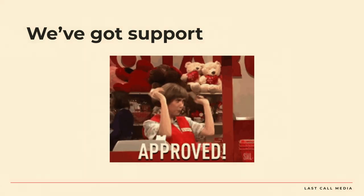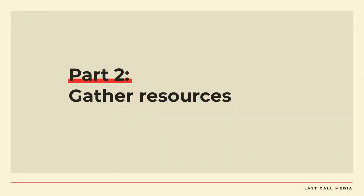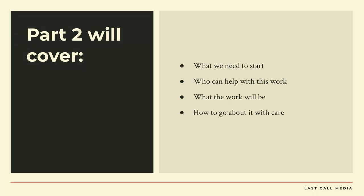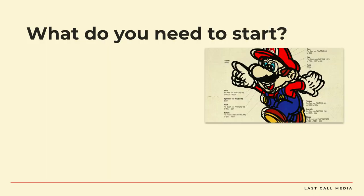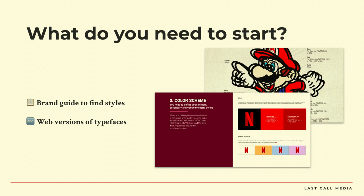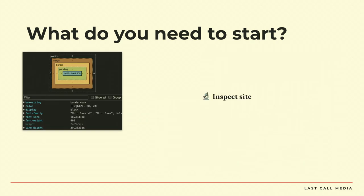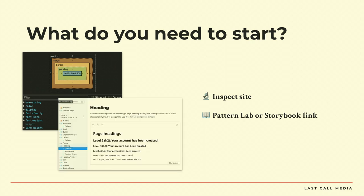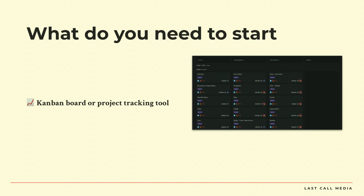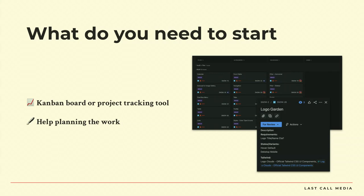Let's just assume we've got our support — everybody's on board. Let's gather our resources. We're going to cover what we need to start, who can help us with this work, what the work will actually be, and how we're going to go about it with care. So what do you need to start? Do you need that PDF brand guide to find styles? Do you need web versions of typefaces? Are you familiar with the inspect tools we use in Chrome or whatever browser? Do you need a link to a pattern lab or a Storybook page if there are already live components? Do you need to make a combine board, find a project tracking tool, or make some Jira tickets and a backlog?